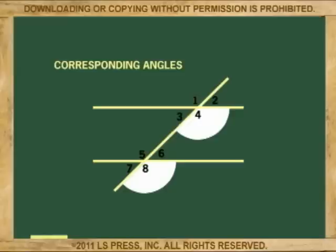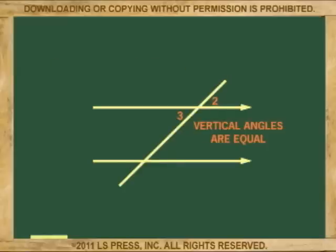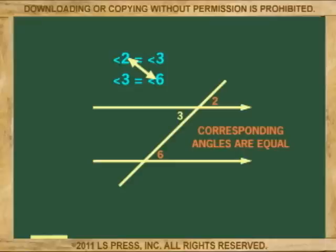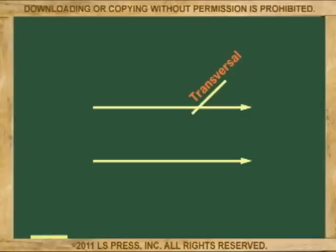Why are these pairs equal? Angle 2 and angle 3 are equal because they are vertical angles, and angle 3 and angle 6 are also equal because they are alternate interior angles. So by substitution, the pair of angles 2 and 6 are also equal.